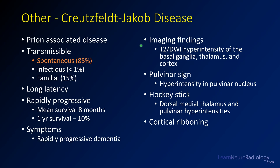The imaging findings seen with CJD include hyperintensity of the basal ganglia, often bilaterally symmetric, involving the thalamus. You can also see cortical ribboning — thin T2 hyperintensity in the cortex. The pulvinar sign is hyperintensity in the pulvinar nucleus of the thalamus, seen in the dorsal thalamus. You can also see the hockey stick sign, which involves the dorsomedial thalamus and pulvinar together.